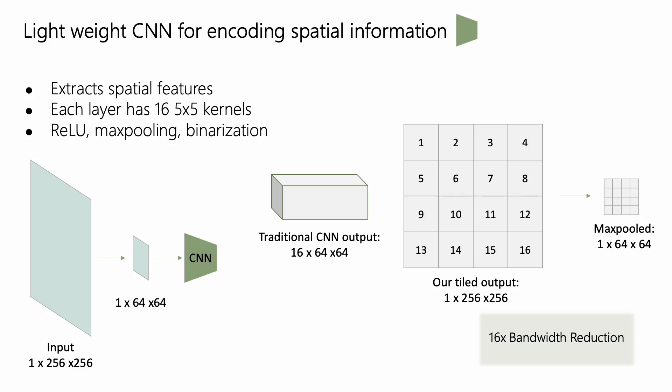Unlike traditional CNNs, the output is concatenated into this tile structure, and we perform a max pooling to reduce all the output features into a single 64x64 feature map. This gives a 16x bandwidth reduction.